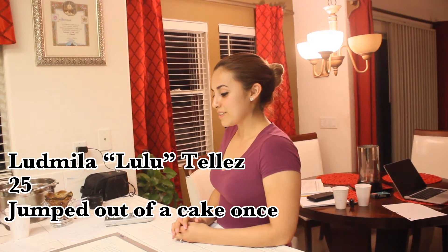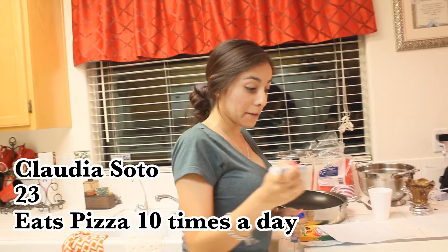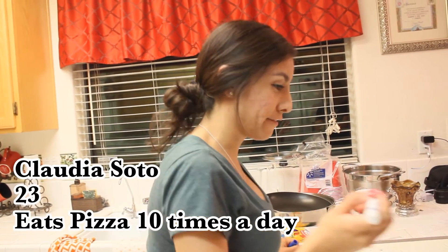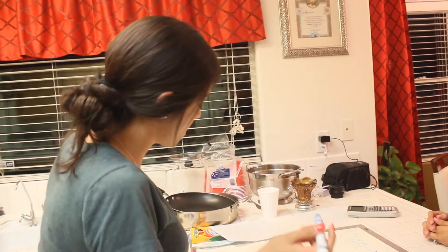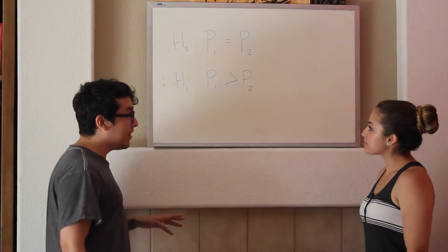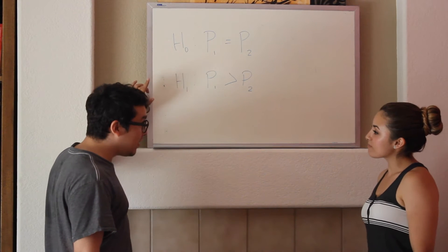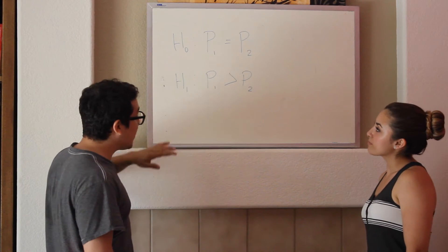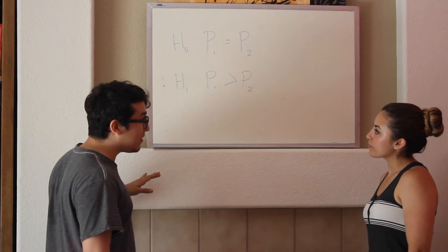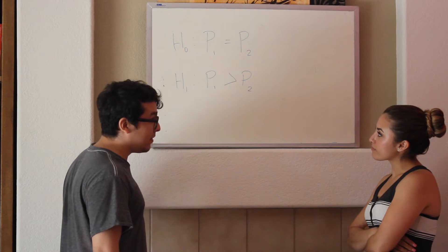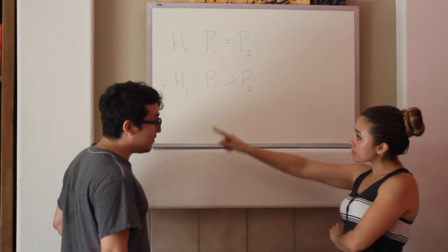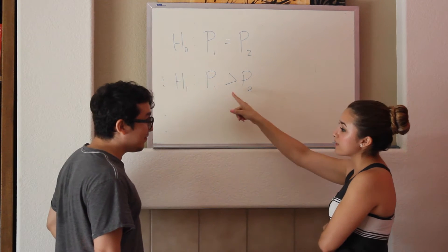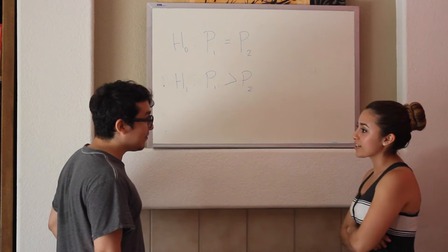Lulu doesn't know what she's talking about. Okay, so what did you have for lunch today? Well, for breakfast I had pizza, and then for lunch I had pizza again. Okay, the null hypothesis is that men and women have no preference — they like beer and liquor the same. And the alternative hypothesis is that more women than men prefer liquor.